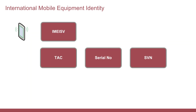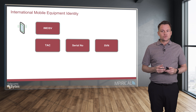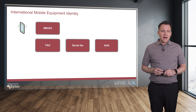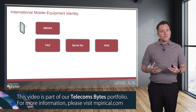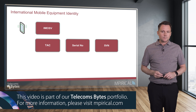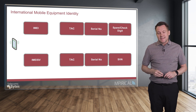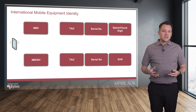The IMEI SV is a 16-digit number that consists of the same type allocation code and the same serial number. With the IMEI SV, the check digit is replaced with an SVN — a software version number — which gives us information about which version of software the mobile device is running. When the software is updated, the SVN itself will be incremented as well. So both the IMEI and the IMEI SV serve as unique identifiers to identify devices on the network.